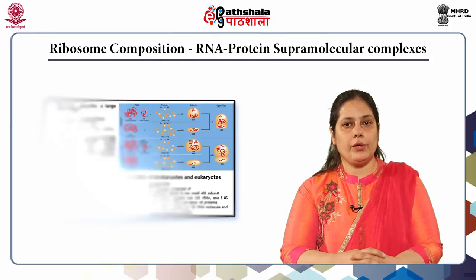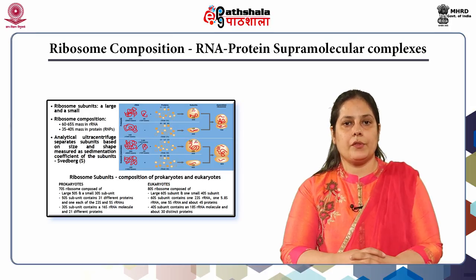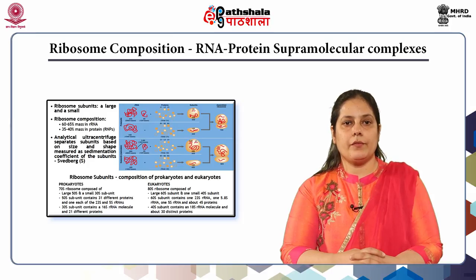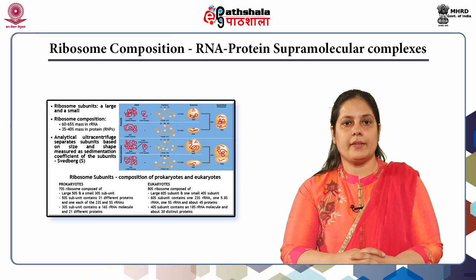Eukaryotes have four distinct ribosomal RNAs: three in the large subunit comprising the 28S, 5.8S, and 5S RNA molecules, and one 18S RNA molecule in the small subunit. Three of the four ribosomal RNAs forming the 40S and 60S subunits are derived by various nucleases from a long polycistronic pre-ribosomal RNA transcript, with the only exception being the 5S rRNA, which is synthesized from a separate RNA precursor outside the nucleolus.